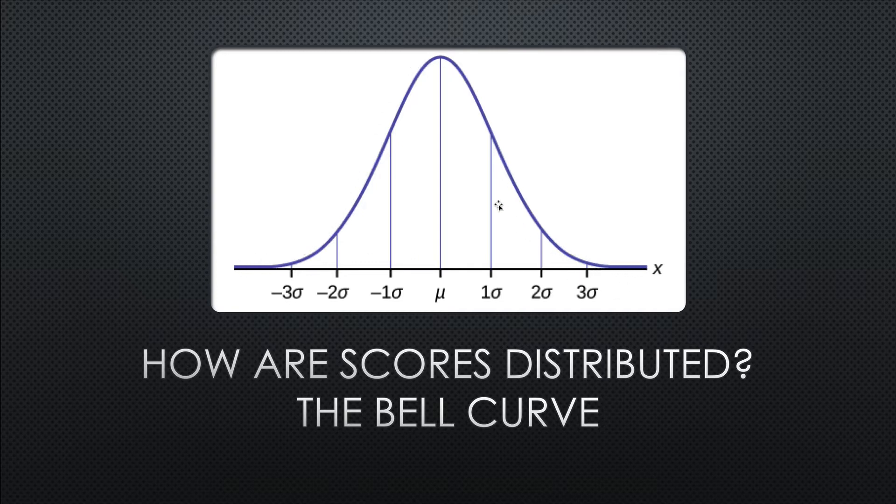But suffice it to say that the majority of the people, the majority of the measures typically are going to fall in this type of a pattern, giving us what's called a normal curve or a bell curve, where most of the people, their scores are close to the mean, and there's far fewer people as we get further away from the mean. And this is typically what we see if we measure body weight within an average population.